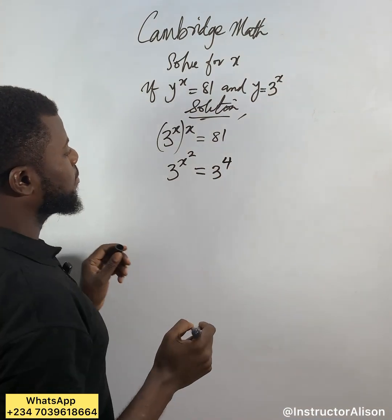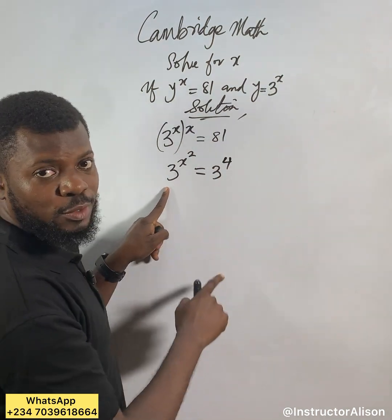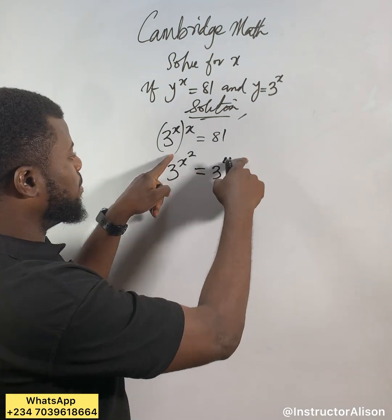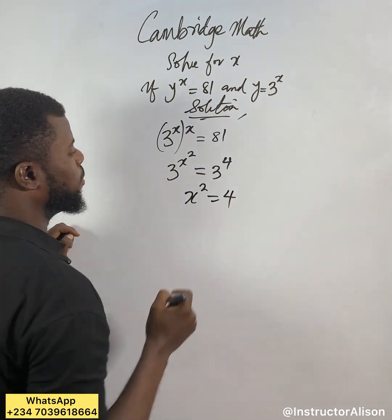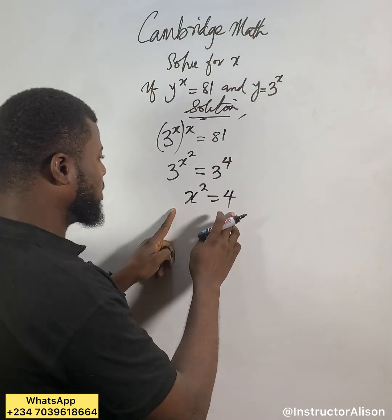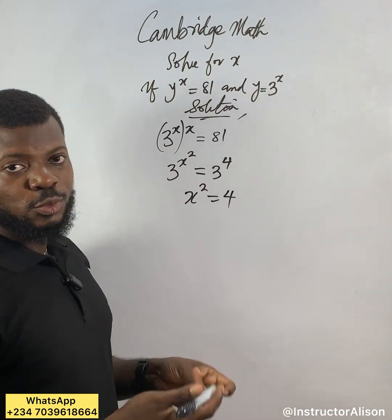Now anytime you have the same bases, you will equate the powers. So x squared now will be equal to 4. Anytime it's a case like this and I want to find x, you can take the square root of both sides of the equation.